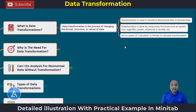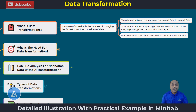When we are talking about data transformation, it is a transformation that is used to transfer non-normal data to normal data. This transformation is done by using many functions such as square root, logarithm, power, reciprocal, or arc sine, and there are many multiple options. We can use the calculator option in Minitab to calculate this transformation, and this transformed data is what we use for analysis.